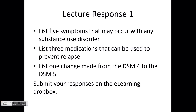For lecture response one: list five symptoms that may occur with any substance use disorder. Go back and find those 11 symptoms of a substance use disorder in one of the prior sections — I'm not going to tell you which ones; you have to go back and find it yourself. Also list three medications that can be used to prevent relapse. We were talking about several for alcohol, opioid use disorder, and there was also one for amphetamine use disorder — list any three of those from the lecture. You don't have to give any deep explanation; just link it to whichever particular substance it's been used for.